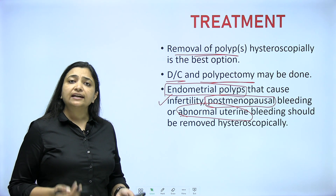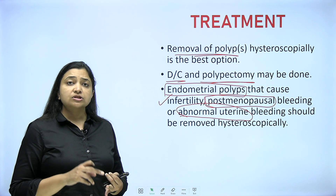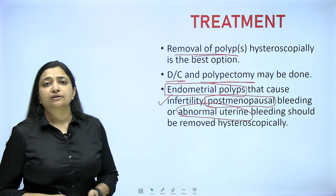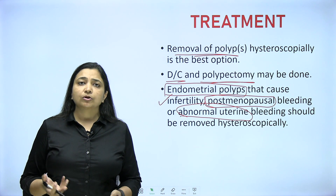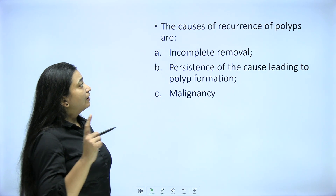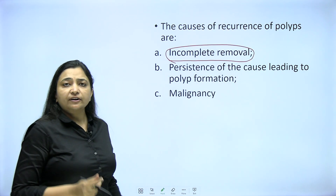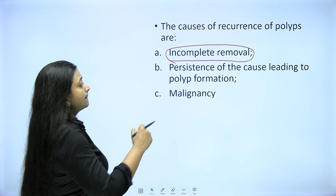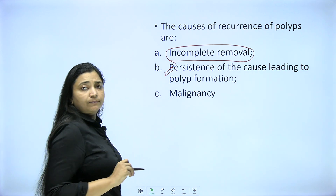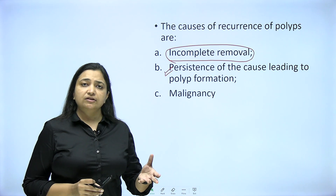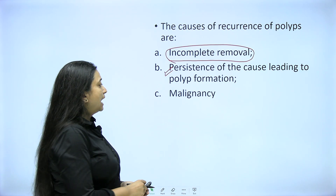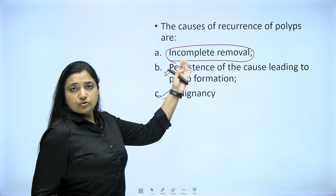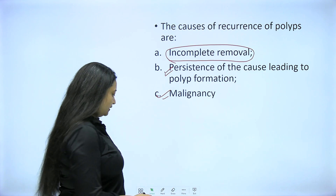For examination purposes, hysteroscopic polypectomy is the treatment of choice. Not all polyps need to be removed - a small benign endometrial polyp causing no trouble in reproductive age group can be left. But polyps causing infertility, postmenopausal polyps (as malignant change is common in postmenopausal bleeding), or those causing abnormal uterine bleeding should be removed. Indications of surgery: postmenopausal state, suspected malignant change, infertility, or AUB. If the polyp recurs after removal, the most common cause is incomplete removal - you must remove from the base and cauterize it. Other causes are persistence of the estrogenic environment and malignant change.